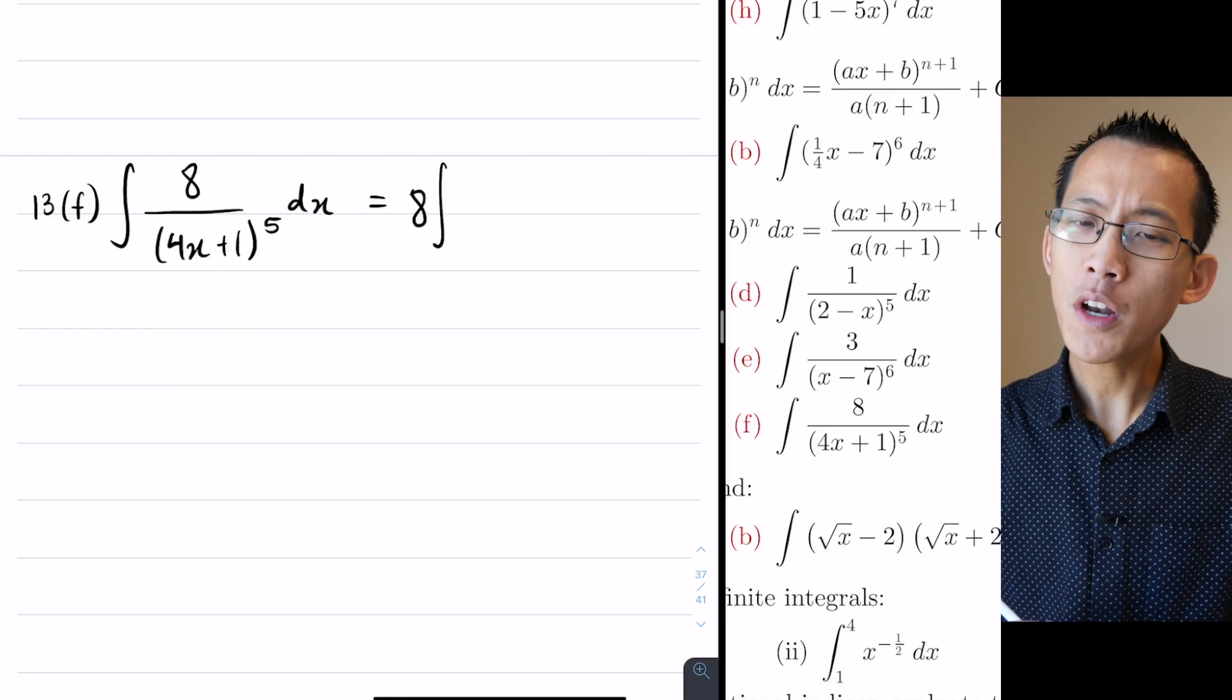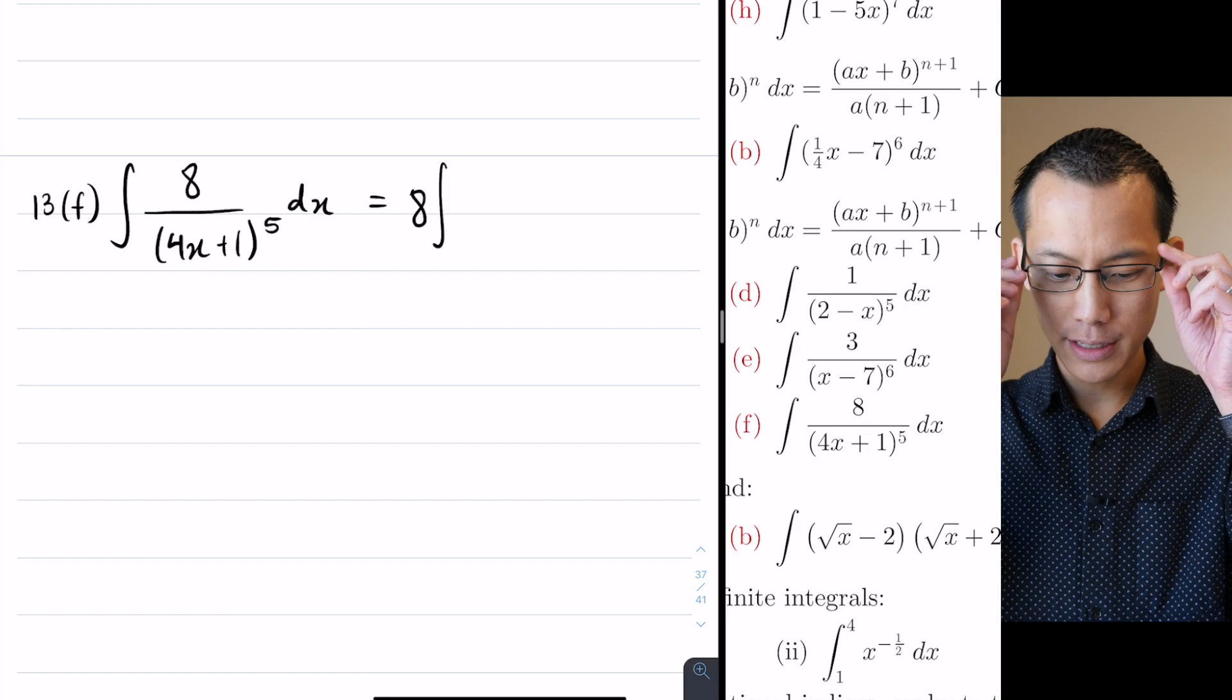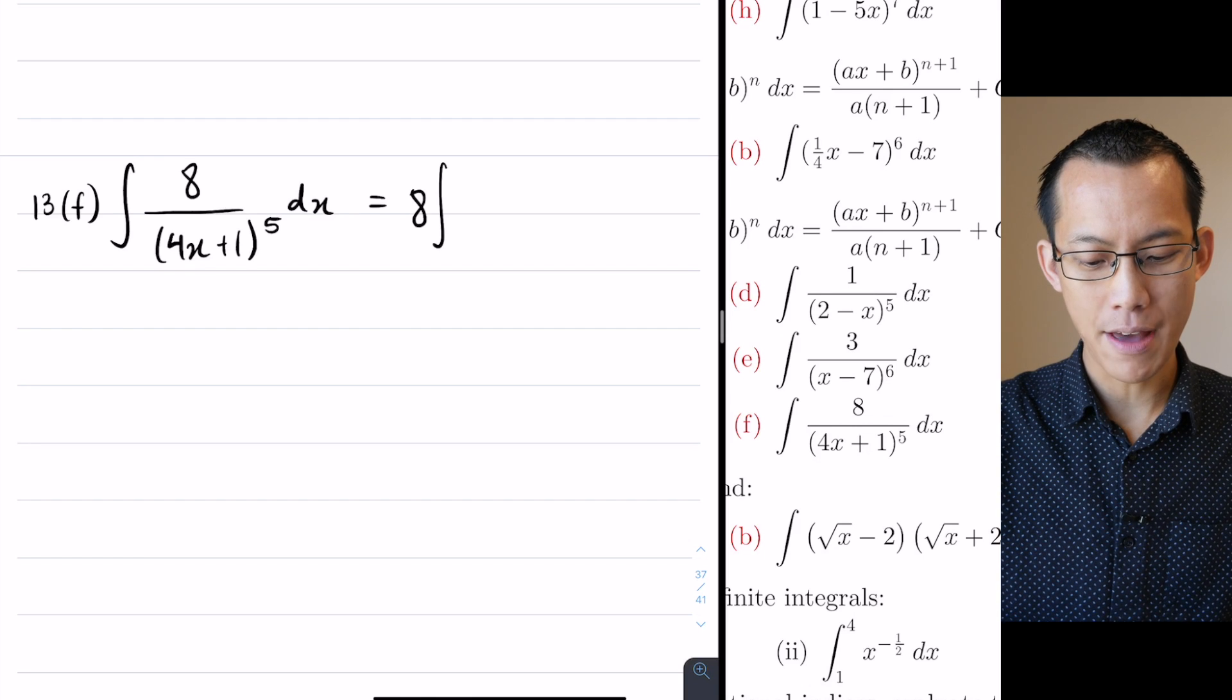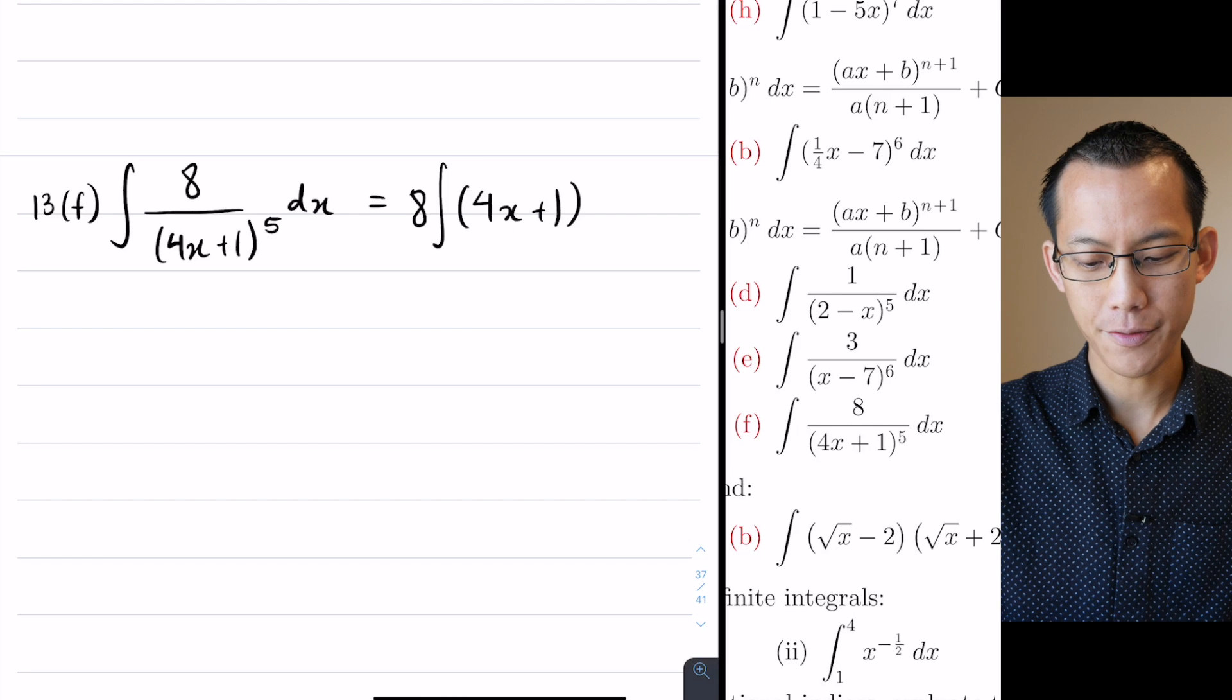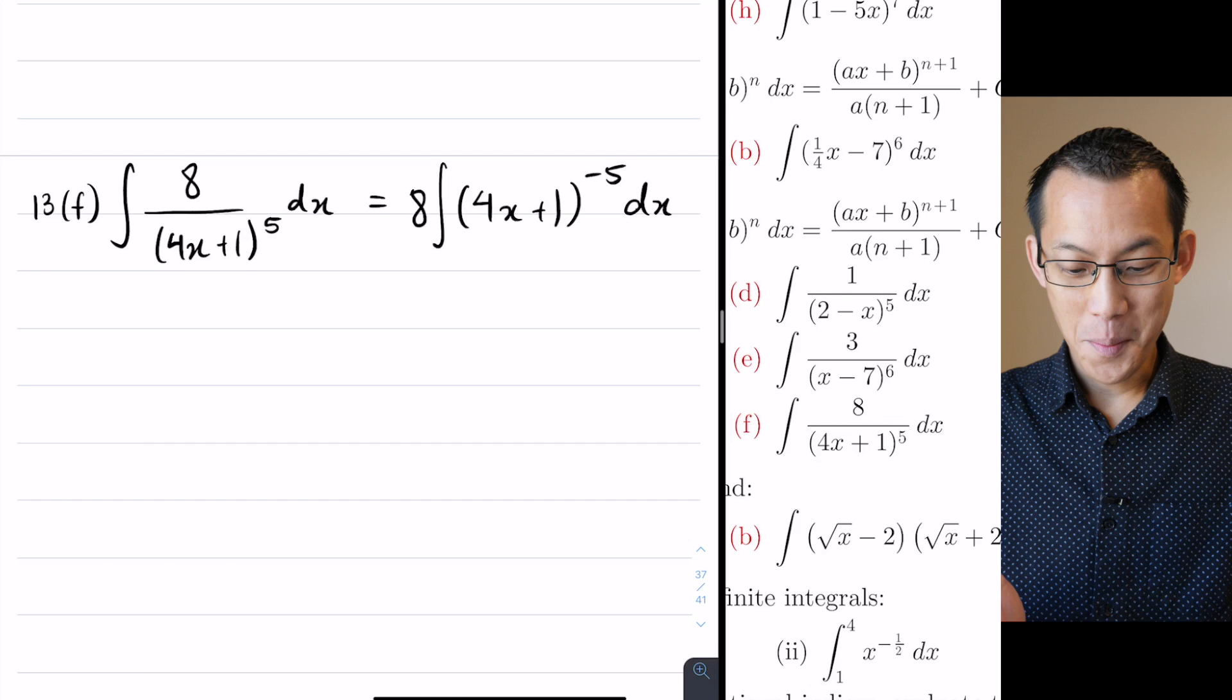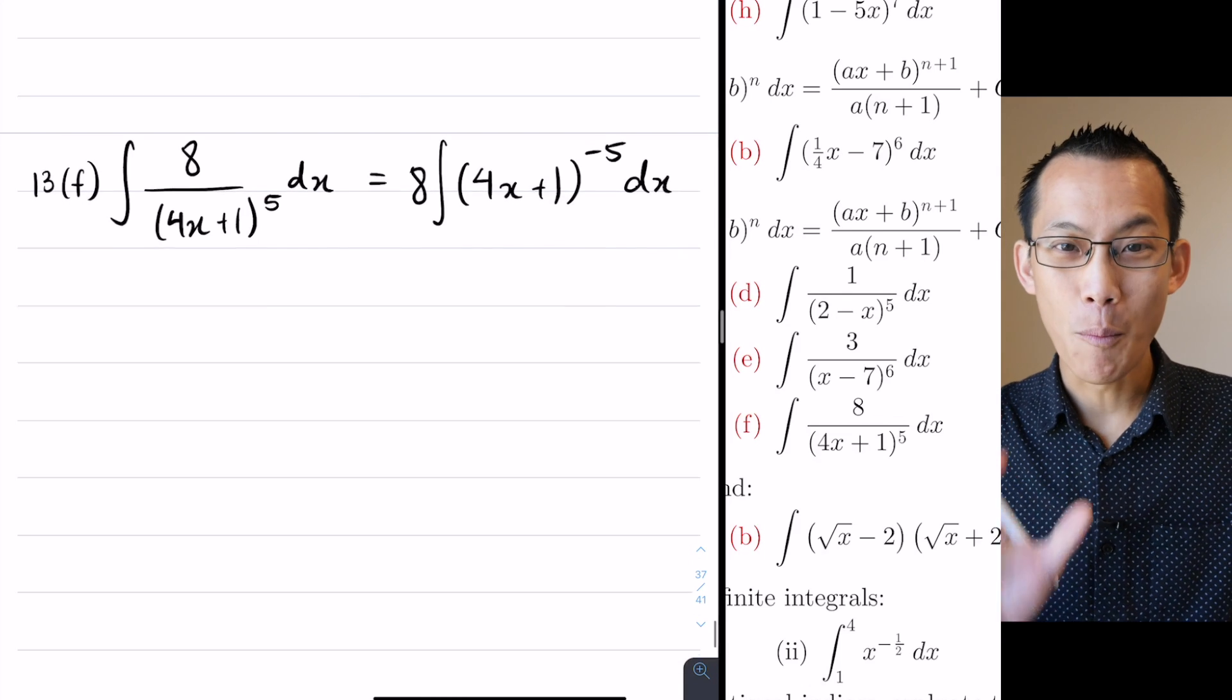What am I integrating? Well, rather than write this in fractional form, as you saw before, it's much easier to deal with this if we write it with a negative index. So in this case I would write that as (4x + 1)⁻⁵, and then I'm going to do it with respect to x. My ingredients are ready, I'm ready to go.